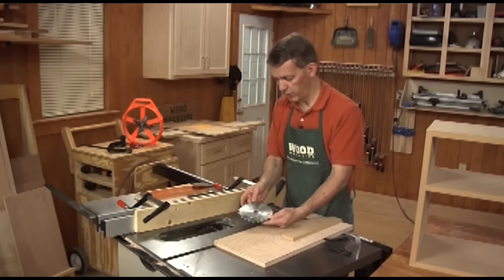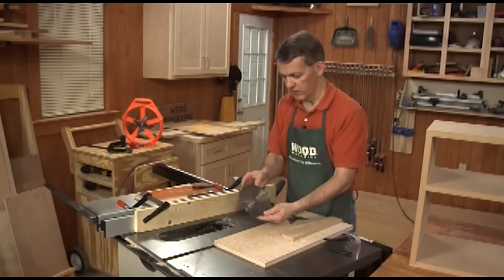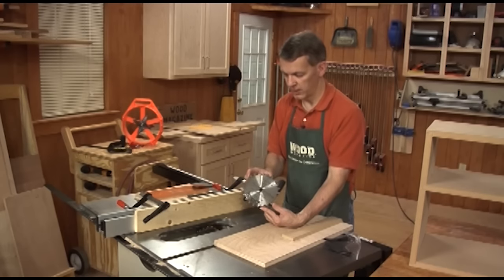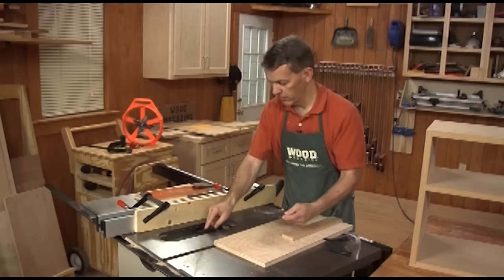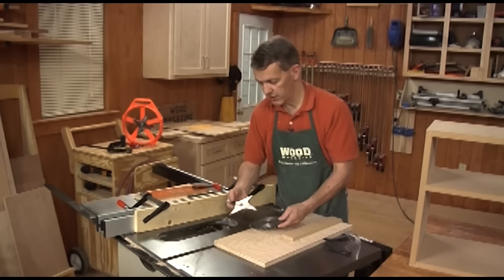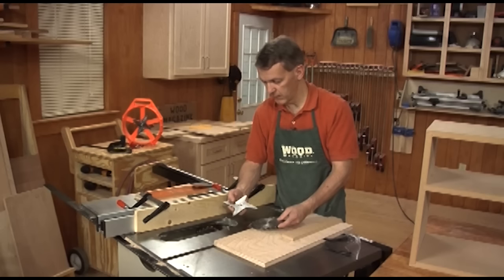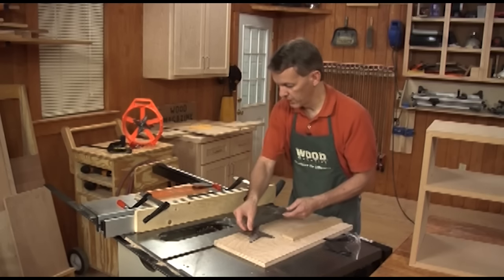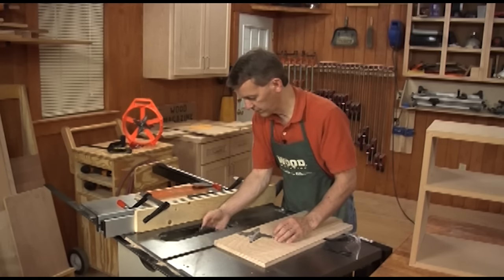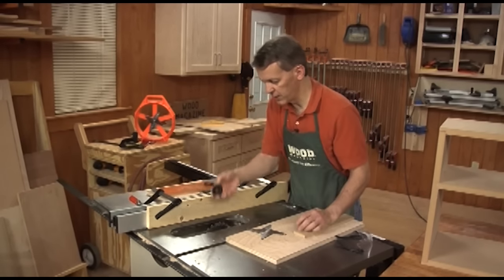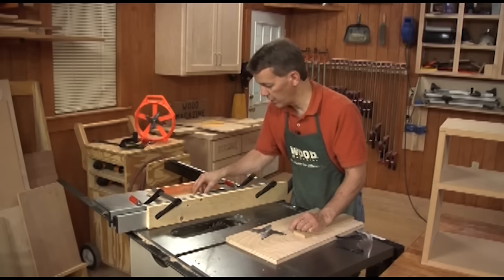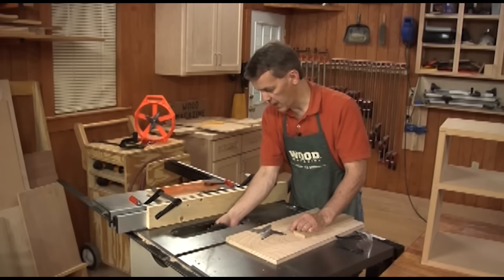This is a six-inch dado blade. It consists of a miniature, a six-inch in diameter chipper that goes on the outside. There's actually two of these when you fit them into the saw. Then there's a series of chippers that go between the two outside blades. By stacking these together on the arbor, you come up with a much wider blade. It makes a wider cut. By changing the number of chippers in there, you can vary the width of your cut.